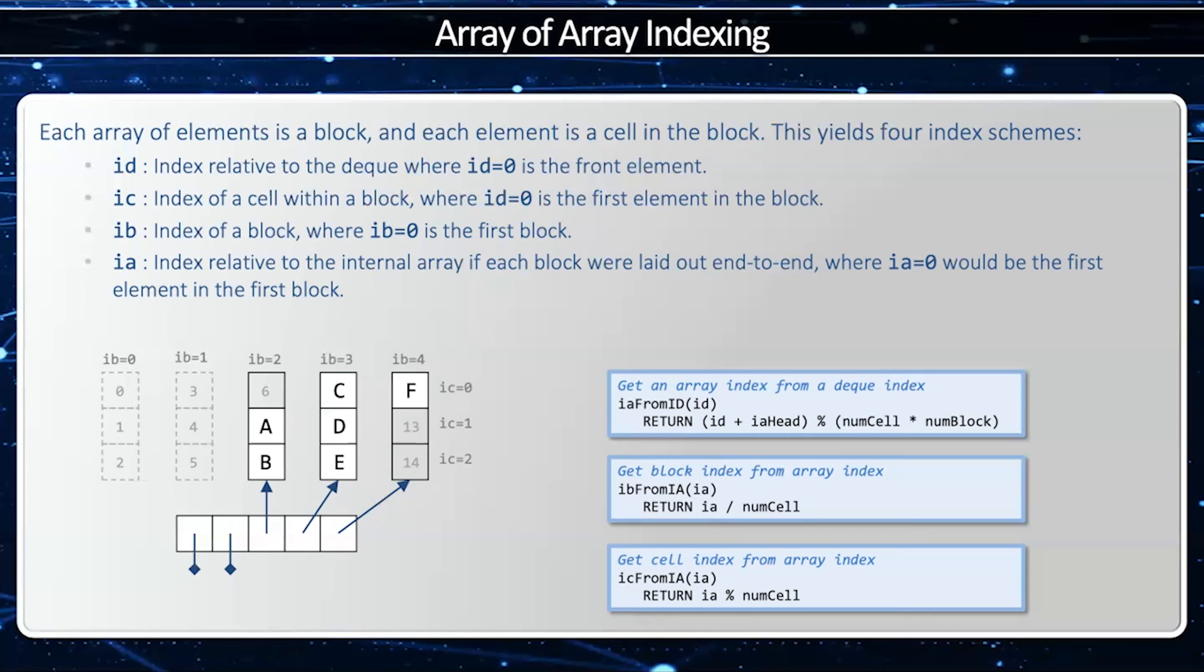Then finally, I have my array index. If all the blocks were laid flat, then my array index will go 0 through, in this case, five blocks and three cells each, 0 through 14.